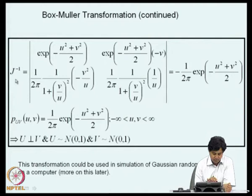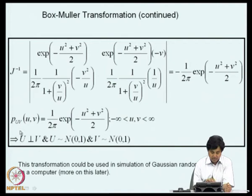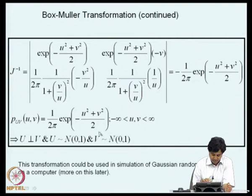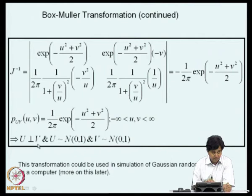In this example too, it is easier to find 1/J than J itself. Computing the derivatives dou x/dou u, dou x/dou v, dou y/dou u, and dou y/dou v leads to an expression for 1/J. Since x and y are uniformly distributed, P_uv(u,v) is given by |J|^{-1}, leading to the joint density function. To find the marginal density of U, we integrate over v, and similarly for V by integrating over u. We can verify that U and V are standard normal random variables with zero mean and unit standard deviation, and they are independent.